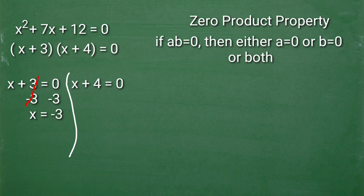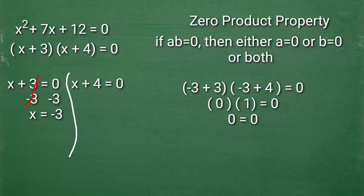So ibig sabihin, kapag sinabsitute natin ang negative 3 dun sa x, yung a natin magiging zero. At yung x plus 4 natin magiging 1. And 0 times 1 is equal to 0.